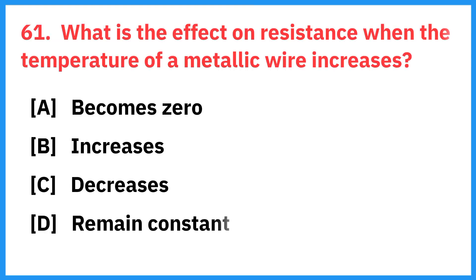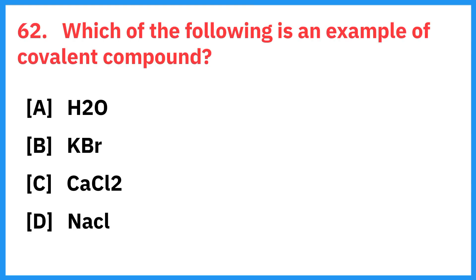What is the effect on resistance when the temperature of a metallic wire increases? Right answer is it increases. Which of the following is an example of a covalent compound? Correct answer is H2O.